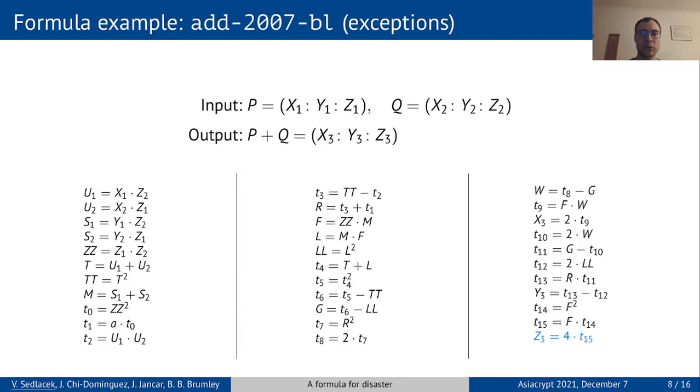To find all exceptional points, it is enough to analyze when you could possibly divide by zero, which in this scenario means investigating when the z3 coordinate becomes zero. To make this easier, we developed a tool that allows you to unroll the formula using back substitution.